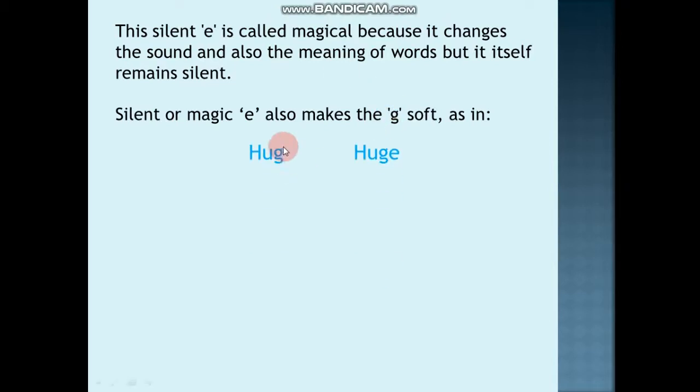Aur woh ek aur cheez karta hai: jahan par G aa raha hai. Hamne jo word dekha tha pehle - hug - isme G hai na. To ab yahan par hum pronounce karte hain 'hug', lekin E add karne ke baad, U ka vowel sound bhi long ho jata hai, aur G ka sound soft ho jata hai. So hug, huge - 'jh' - thik hai, soft ho raha hai. Rag, rage. Rag ka matlab chithre kapda hai, rage matlab gussa hona. Wag, wag matlab jis se kutta apne poonch hilata hai, and wage matlab humaari tankhah. So aap dekh rahe hain, idhar G or J, kaise change ho raha hai. Stag - male hiran ko stag kehte hain. Stage - stage matlab jahan par hum khade ho ke presentation karte hain public mein. So aap dekh rahe hain, sound kaise change ho raha hai, just because of magic E. Saath mein, vowel ka long sound bhi aa raha hai.